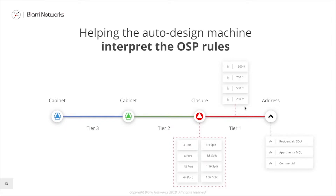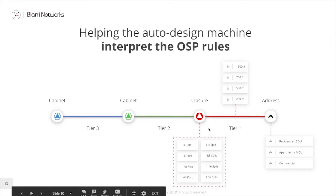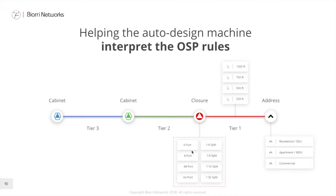Fond will try to minimize the number of closures, but it needs to do that within these rules. The minimum number of closures in a design would be one, but as we can only connect four addresses to a closure if we use a four-port size, that changes the way Fond will go about connecting addresses to closures.